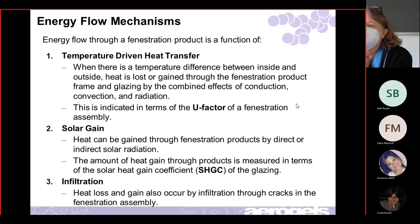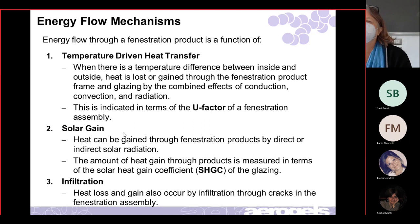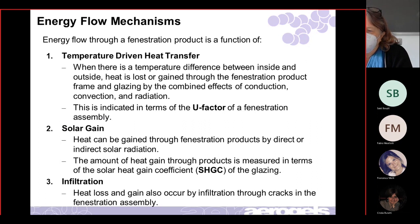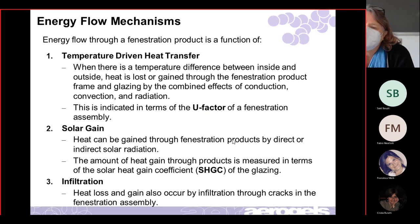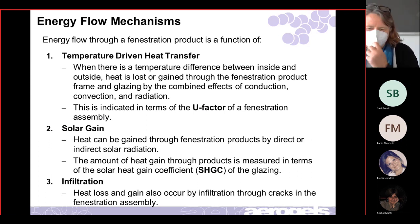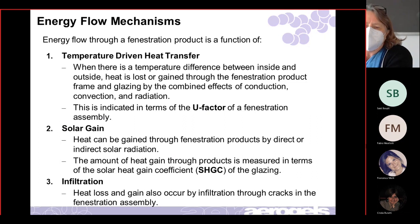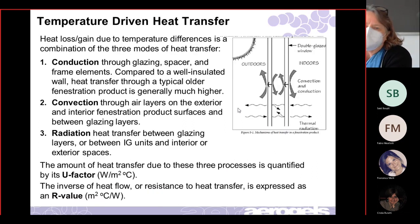Solar gain: heat is gained through fenestration products by direct or indirect solar radiation, measured by the solar heat gain coefficient (SHGC). These are the two main things you care about for windows — U-factor and SHGC. Infiltration just means: are your windows leaky? If you have an old window not properly sealed, you can get air infiltration through the cracks.